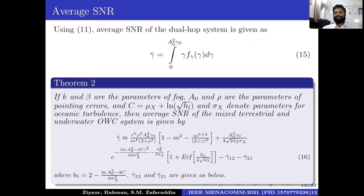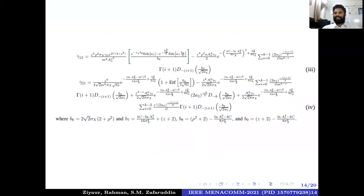Next, we derive the average SNR. The average SNR is given by Equation 15: γ̄ = integral from zero to infinity of γ₀² · γ · f(γ) · dγ. We have a closed-form expression for average SNR in the form of exponential functions and complementary error functions. Here γ̄₁ and γ̄₂₁ are defined. We can substitute all the parameter values — foggy parameters, pointing error parameters ξ and ρ, and the turbulence parameters — to obtain the performance analysis results.